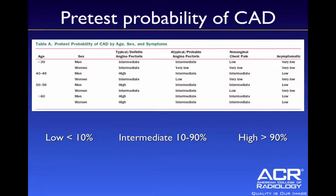One of the key things you're going to need to know in order to determine the appropriate indication for cardiac CT is the pretest probability of coronary artery disease in a patient. There are three main categories: low, intermediate, and high.